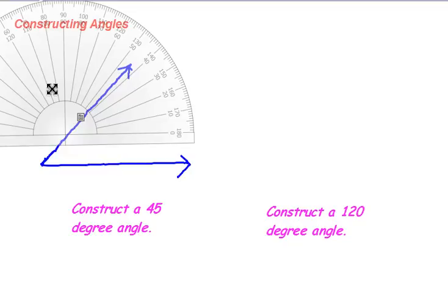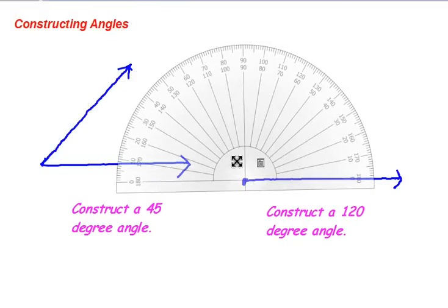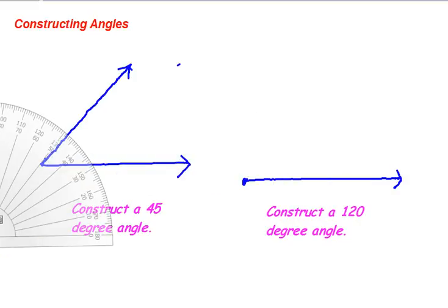Again, we can make a one hundred and twenty degree angle. Use a straight edge and make sure you have a vertex. Count up to one hundred and twenty. Move your protractor, connect them, and you're done.